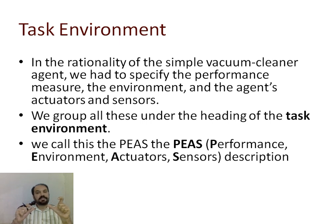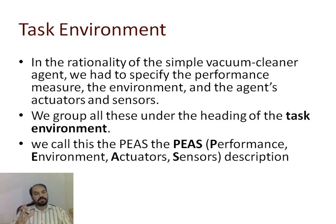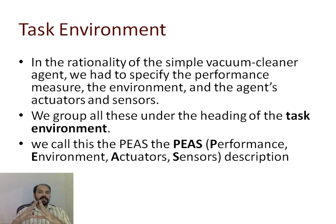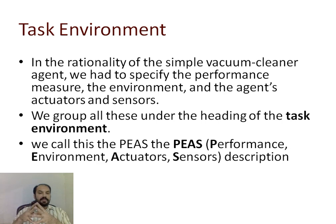When we discuss the rationality of an agent — whether an agent is rational or not — we specify four important considerations: the performance measure, the environment, the actuators, and the sensors. After these specifications, we can decide whether a particular agent is a rational agent or not. We call these four specifications the task environment.